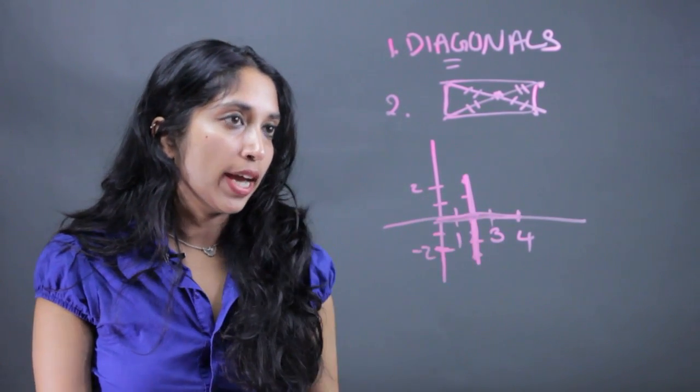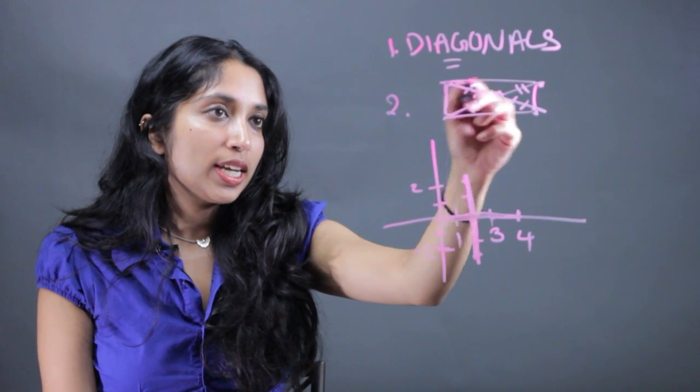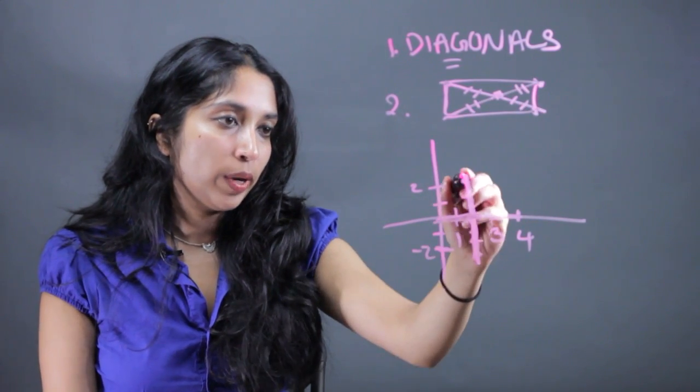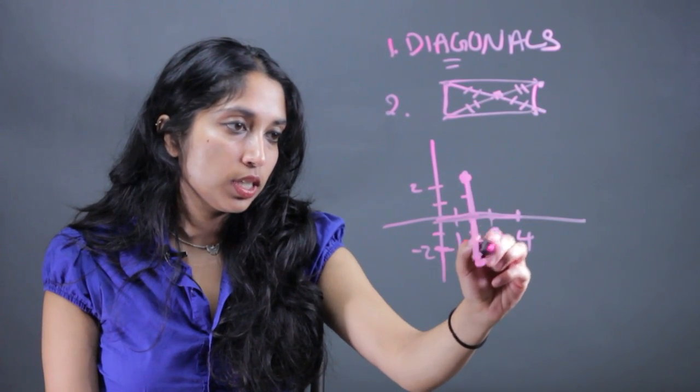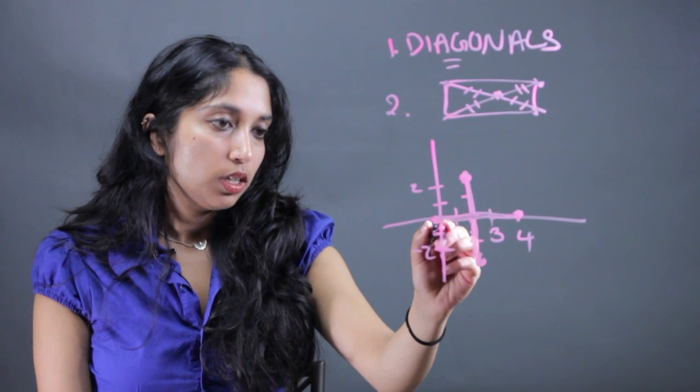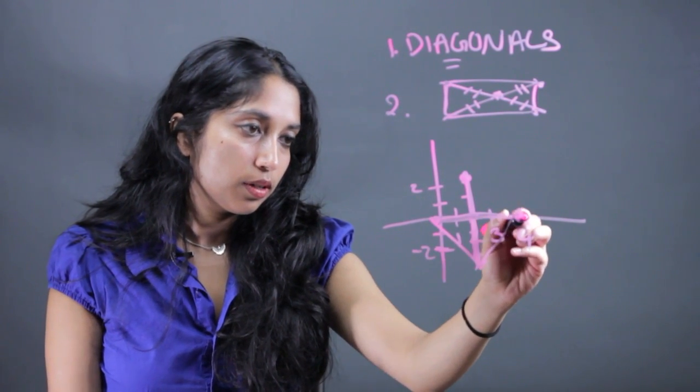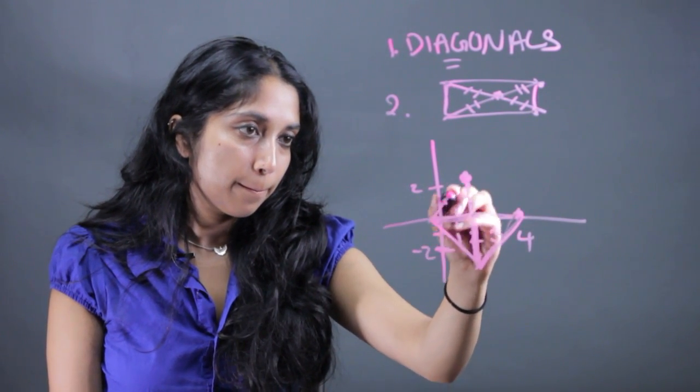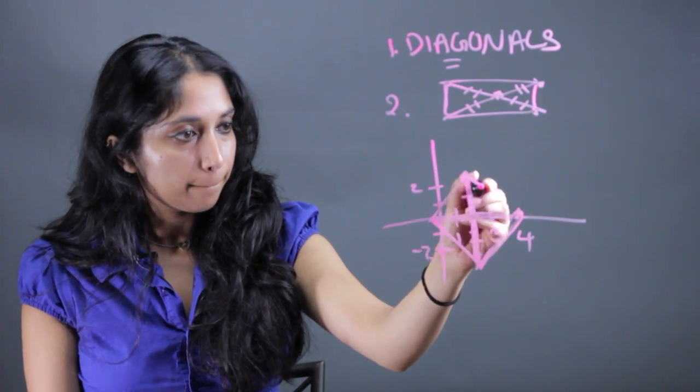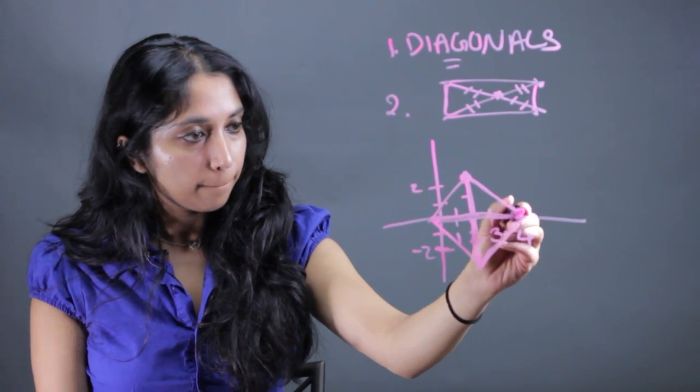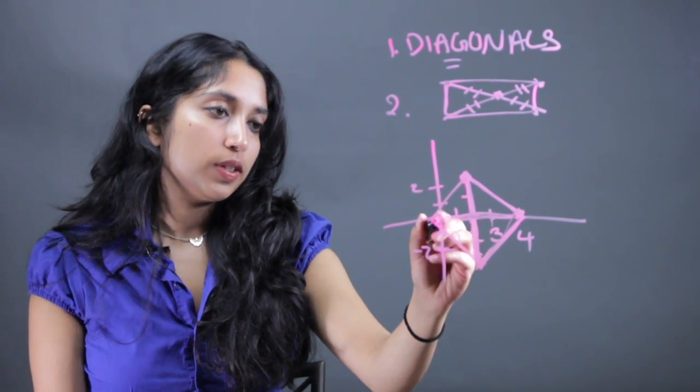So now we have these two diagonals. What now? Well, we know the diagonals hit on the vertices of the rectangle, so if we just draw on these vertices and we connect them, this is going to give us our rectangle.